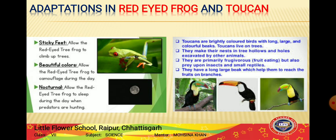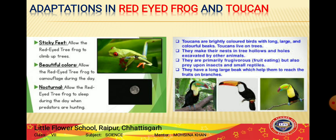The toucan is a bird with a very long, colorful beak that measures more than half the length of its body. This long beak helps it reach fruits on branches that are too thin and weak to support its weight. The toucan's long beak is multifunctional and helps it survive in the rainforest.